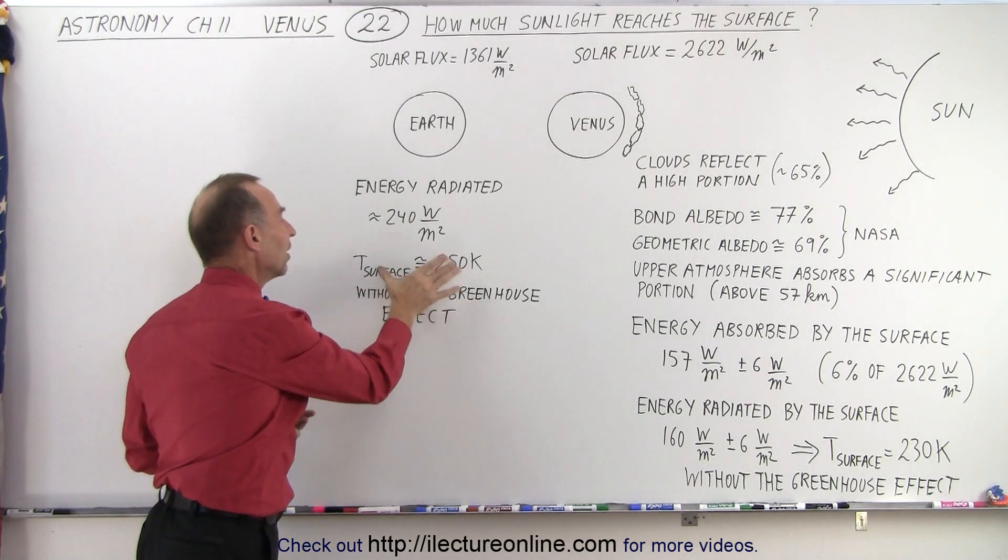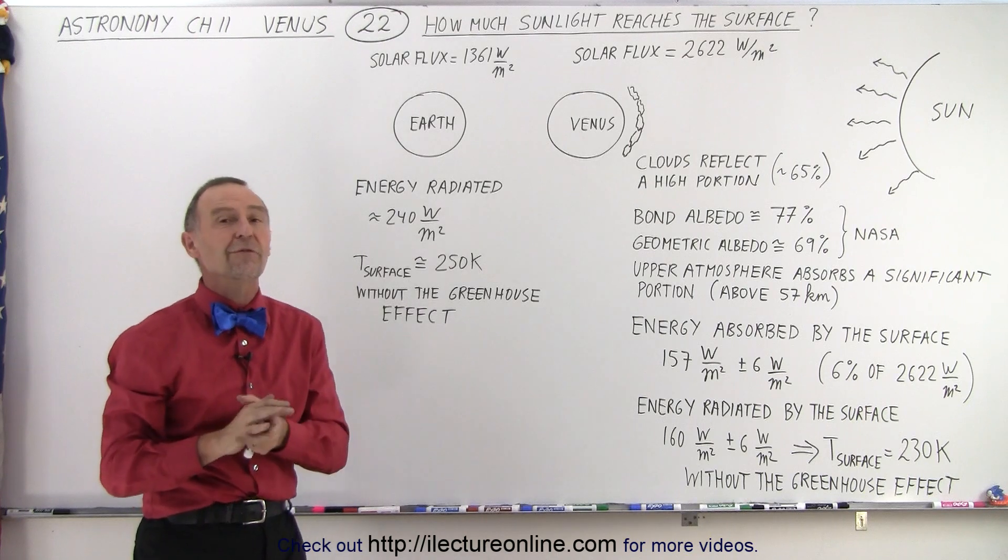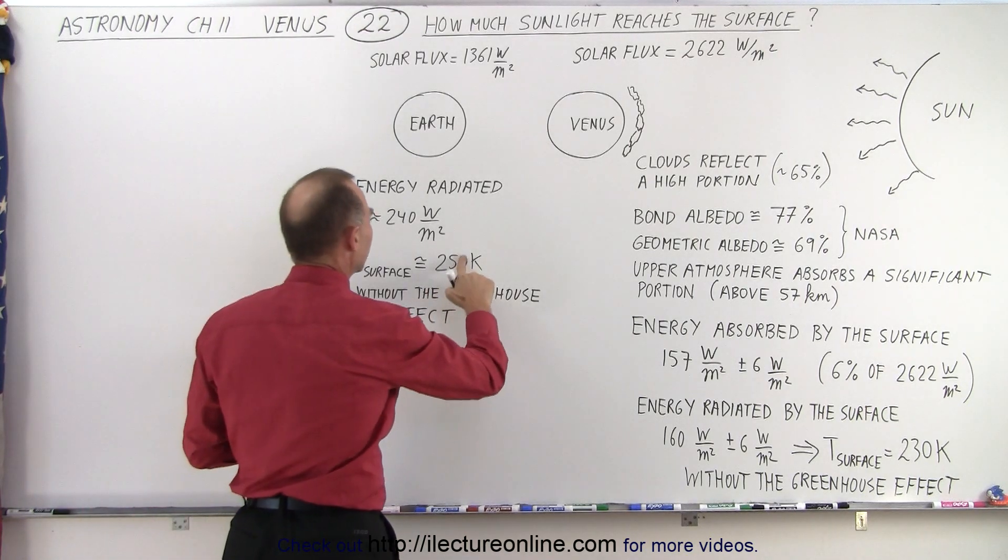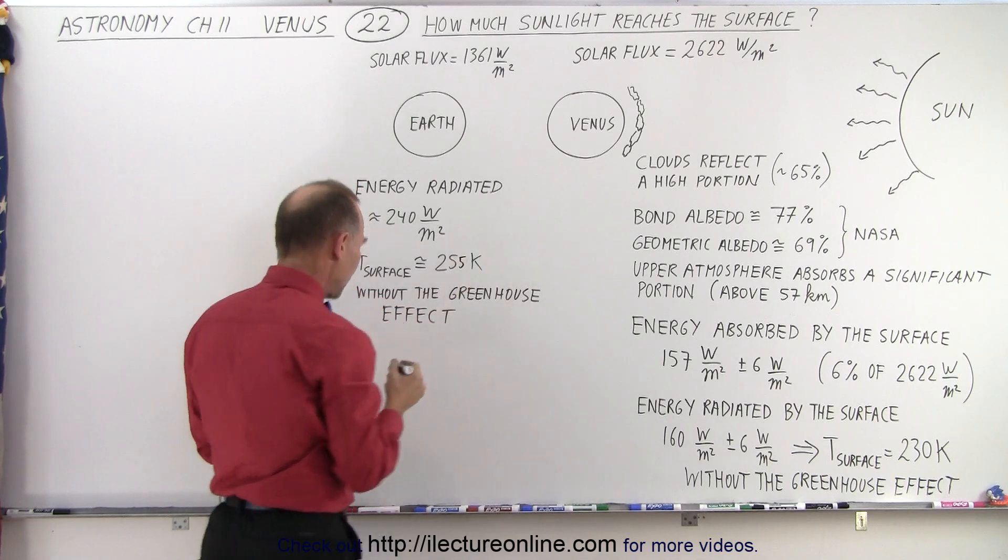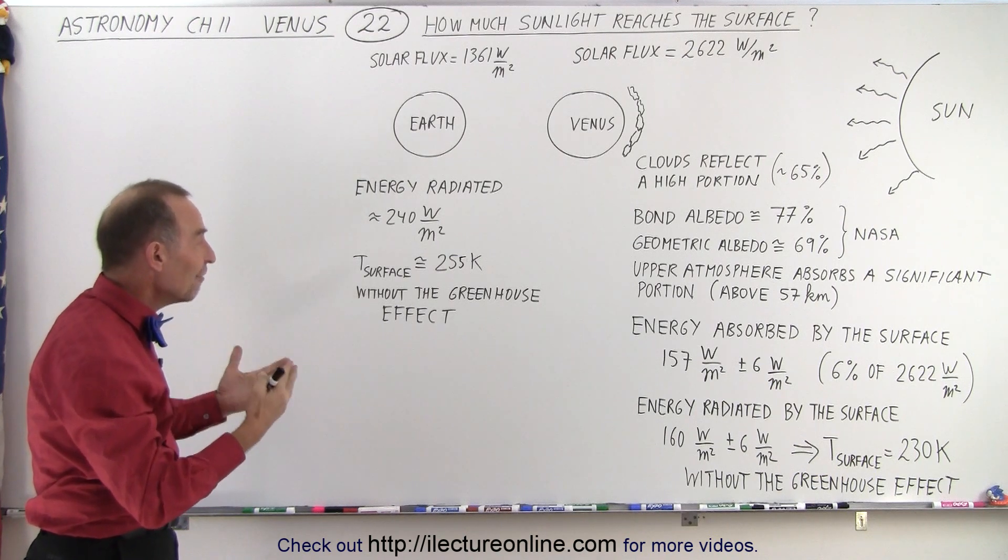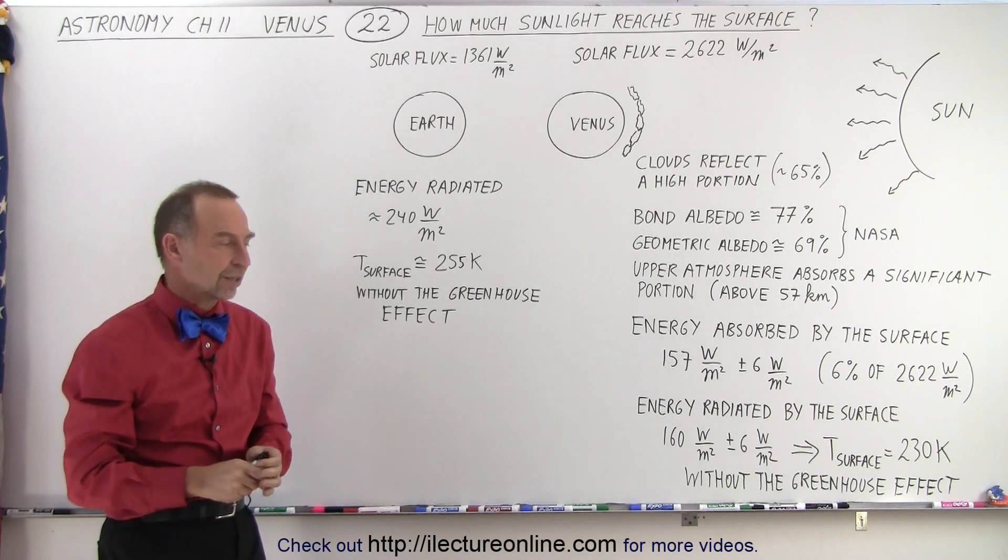Again, without the greenhouse effect, the temperature of the Earth would be around 250 Kelvin, maybe about 255 if you really want to be precise about it. So that would be about 18 centigrade degrees below zero if there was no greenhouse effect.